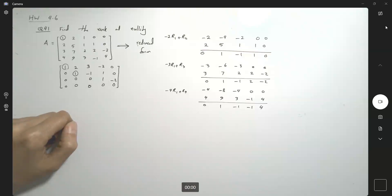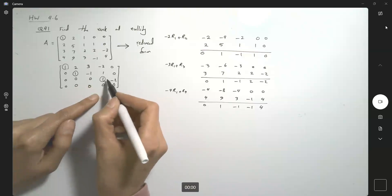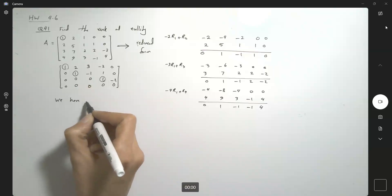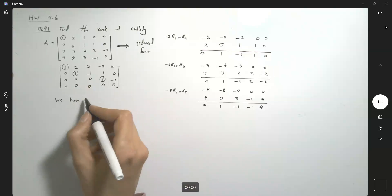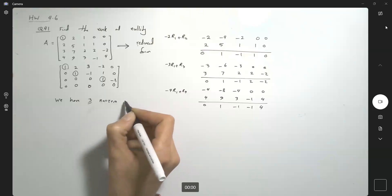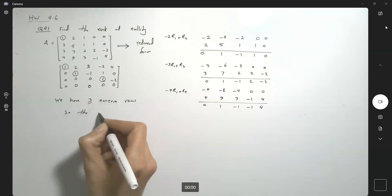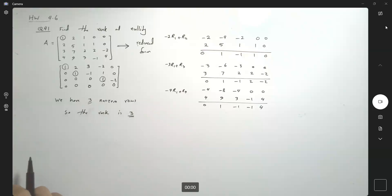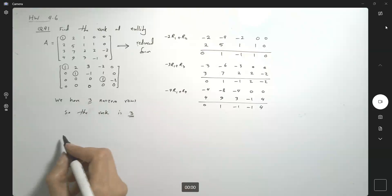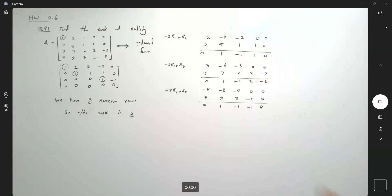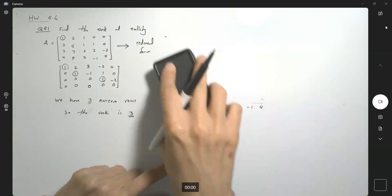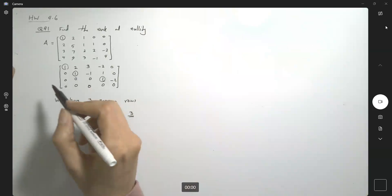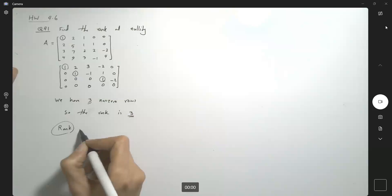So what else do we have? We have 3 non-zero rows, right? We have 3 non-zero rows. So the rank is 3. We found the rank — the rank is 3.